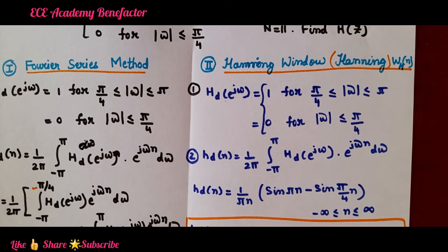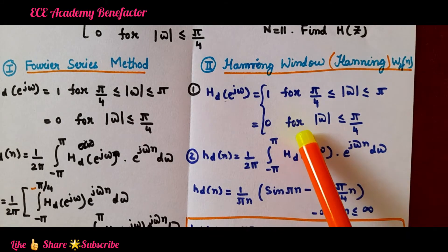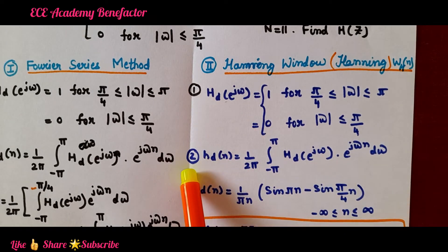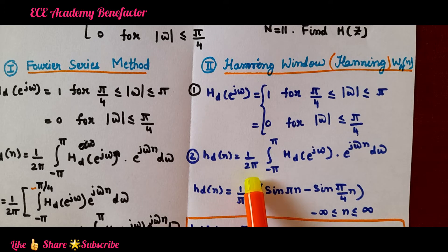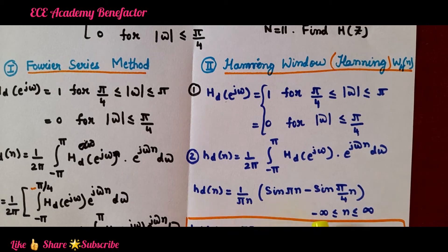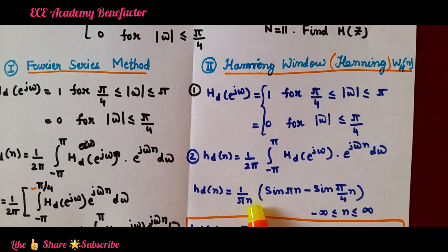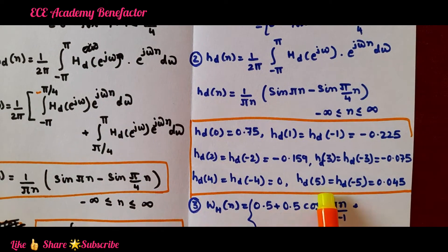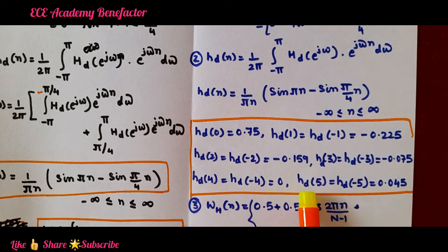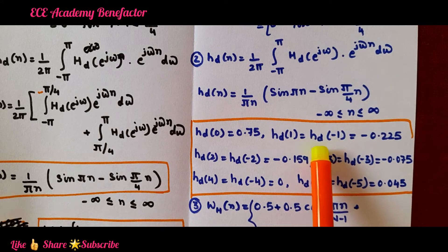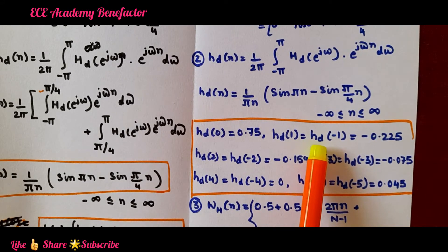Let us now see how to solve the same problem using Hanning window. The first step is the desired frequency response as given in the question. The second step is to find h_d(n) using the formula (1/2π) ∫_{-π}^{π} H_d(e^jω) e^{jωn} dω. On simplifying, h_d(n) = (1/πn)[sin(πn) - sin(π/4 · n)], where n varies from minus infinity to infinity. We then compute h_d(0) through h_d(5) by substituting n = 1, 2, 3, 4, 5. Since the impulse response is symmetrical, h_d(1) = h_d(-1).